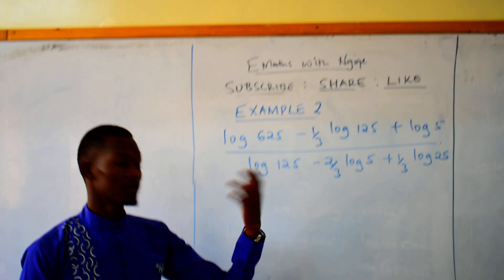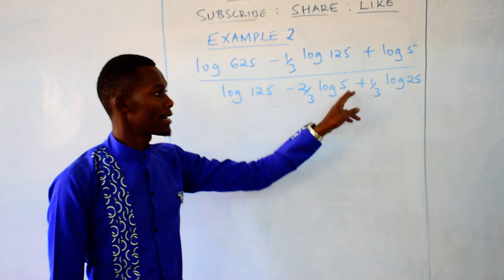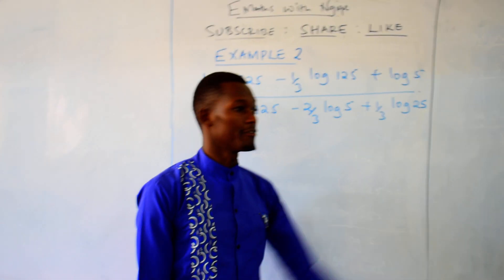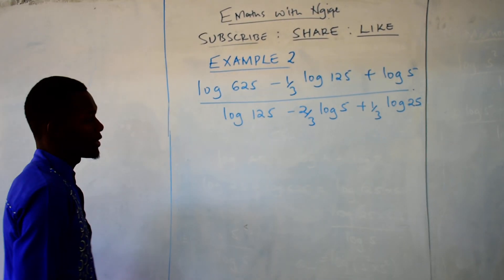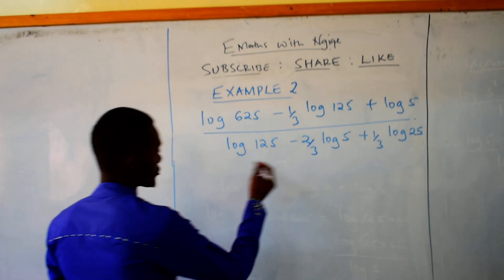Now again, using the second method, these numbers again are related to the base of 5. So we can simplify the numbers into the base of 5.